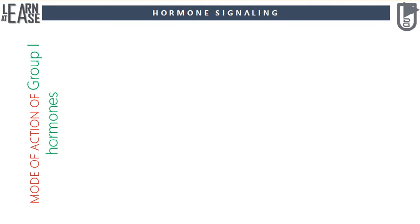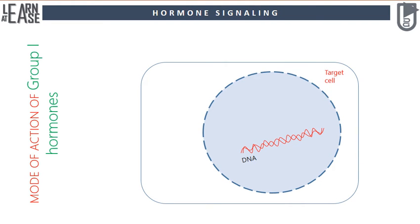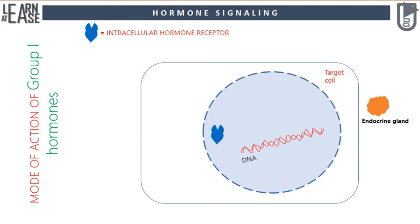Let us see how these hormones act on the target cell using schematic animations. The mode of action of Group 1 hormones is as follows. The target cell is represented here; inside the target cell, the nucleus possessing the DNA is shown. The receptor for Group 1 hormones is present in the nucleus.